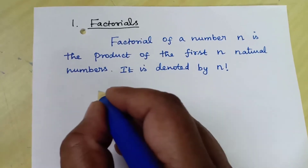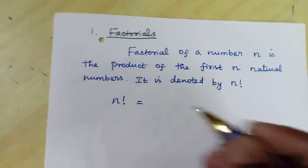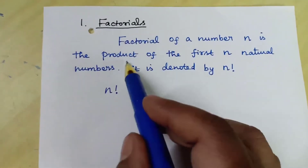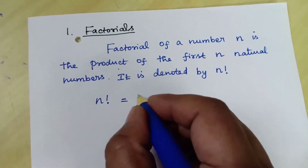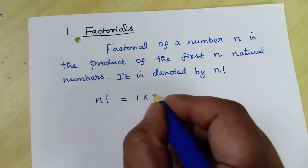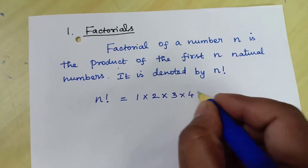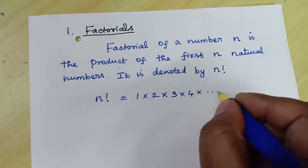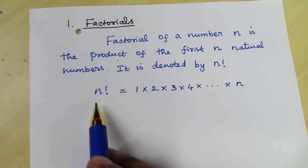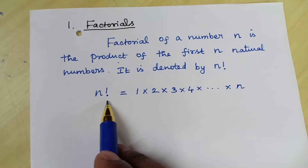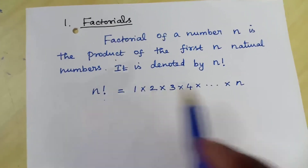we can write n factorial is equal to the product of first n natural numbers: 1 × 2 × 3 × 4 × ... up to n. So n factorial means the product of first n natural numbers.